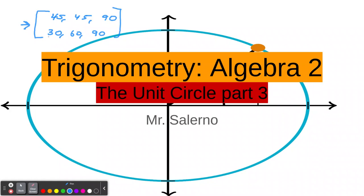If you need to go to part two and part one, you can go back there. Remember, the unit circle means that the radius on the circle is one. The coordinates on this x-axis would be one — x is at one, and y is at zero.